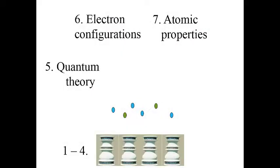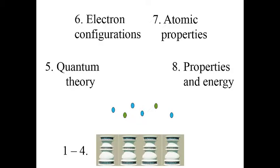In module number 8, we come full circle, tying together the ideas of quantum theory and energetics with the physical properties of atoms. We'll find that the four pillars of chemistry are all represented in the diagrams we draw and the conclusions we make.